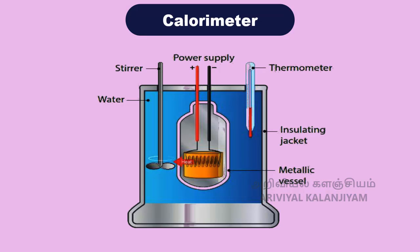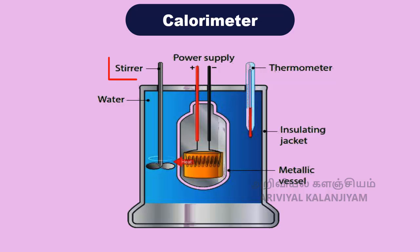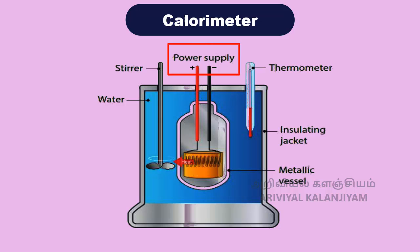Colorimeter: A colorimeter is a device used to measure the amount of heat gained or lost by a substance. It consists of a vessel made up of metals like copper or aluminum, which are good conductors of heat and electricity. The metallic vessel is kept in an insulating jacket to prevent heat loss to the environment. There are two holes in it: through one hole, a thermometer is inserted to measure the temperature of the contents, and a stirrer is inserted through another hole for stirring the content in the vessel. The vessel is filled with liquid which is heated by passing current through the heating element, allowing us to measure the heat capacity of the liquid in the container.